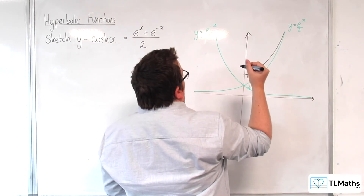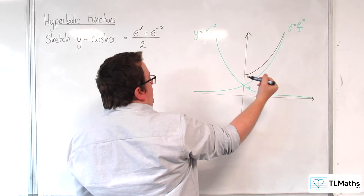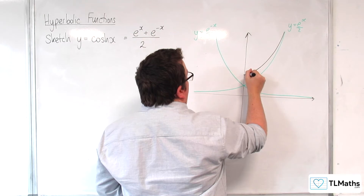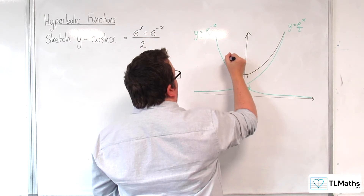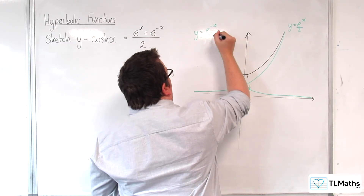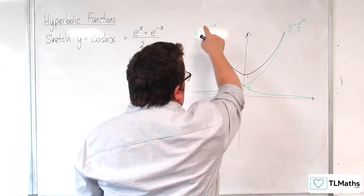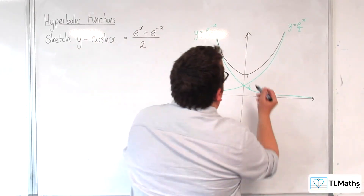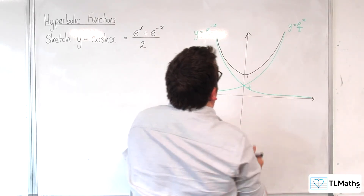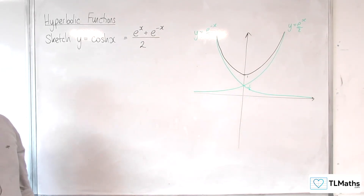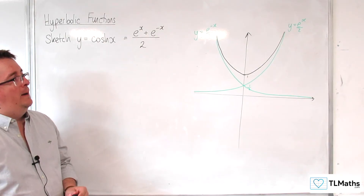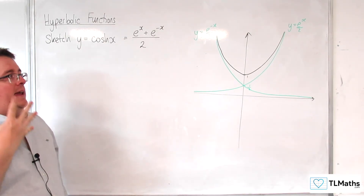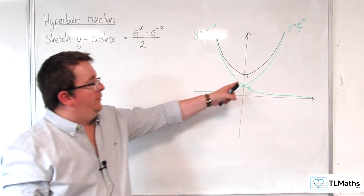In the opposite direction, as x gets larger in the negative direction, we're going to have a similar effect as this one overtakes. So what you get is a symmetric curve like so, and it's got a minimum point at (0, 1).